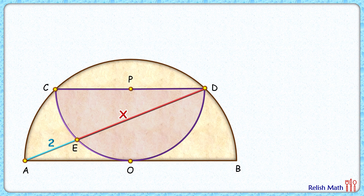Let's check the solution. We'll solve it in two parts. The first part will find the relation between the radius of this purple semicircle and the brown semicircle. The second part will find the value of x. Let's start by assuming the radius of this purple semicircle as r centimeters.